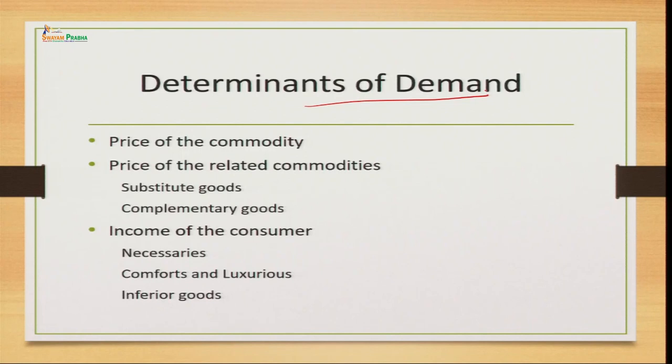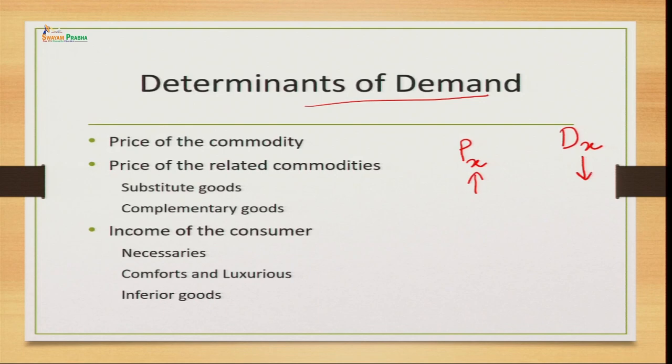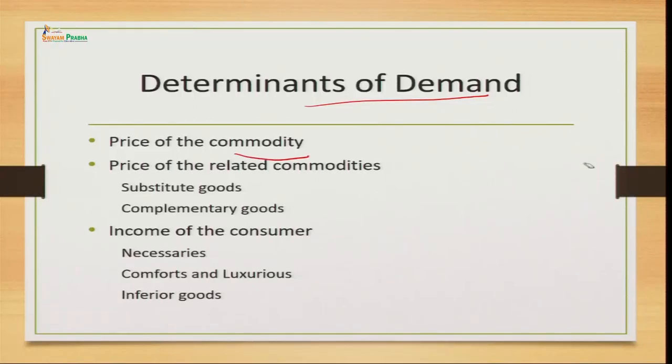Now let us move to determinants of demand. The very first determinant is the price of the commodity, as price is the most important factor. If we have the price of commodity X and demand for commodity X, we need to understand how demand will be affected by a change in price. Price has an inverse relationship with demand — whenever the price of commodity X increases, the demand for commodity X decreases, and vice versa.